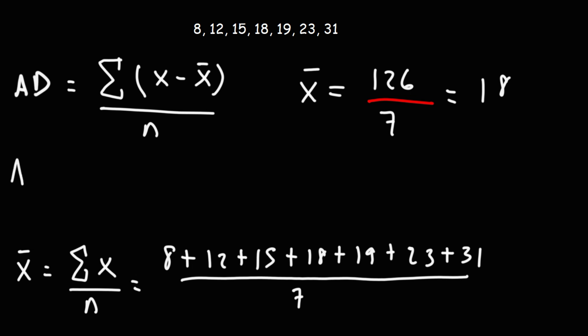So now we can calculate the average deviation. We're going to take each number and subtract it from the mean. So we have 8 minus 18, and then 12 minus 18. I'm going to run out of space, so we'll have to do this mentally.